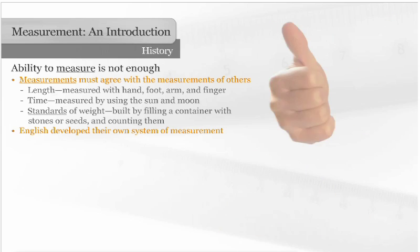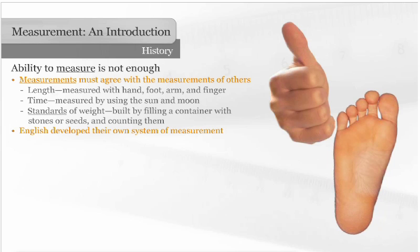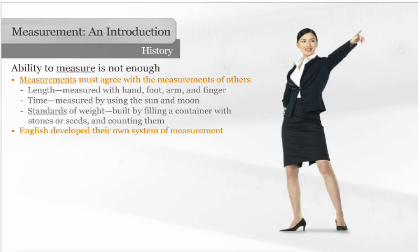The English developed their own loose system of measurement based on common items and tradition. An inch was the width of a thumb. A foot was the length of a foot, and a yard was either the distance between the tip of one's nose to the end of the middle finger or the length of the sash around a person's waist.